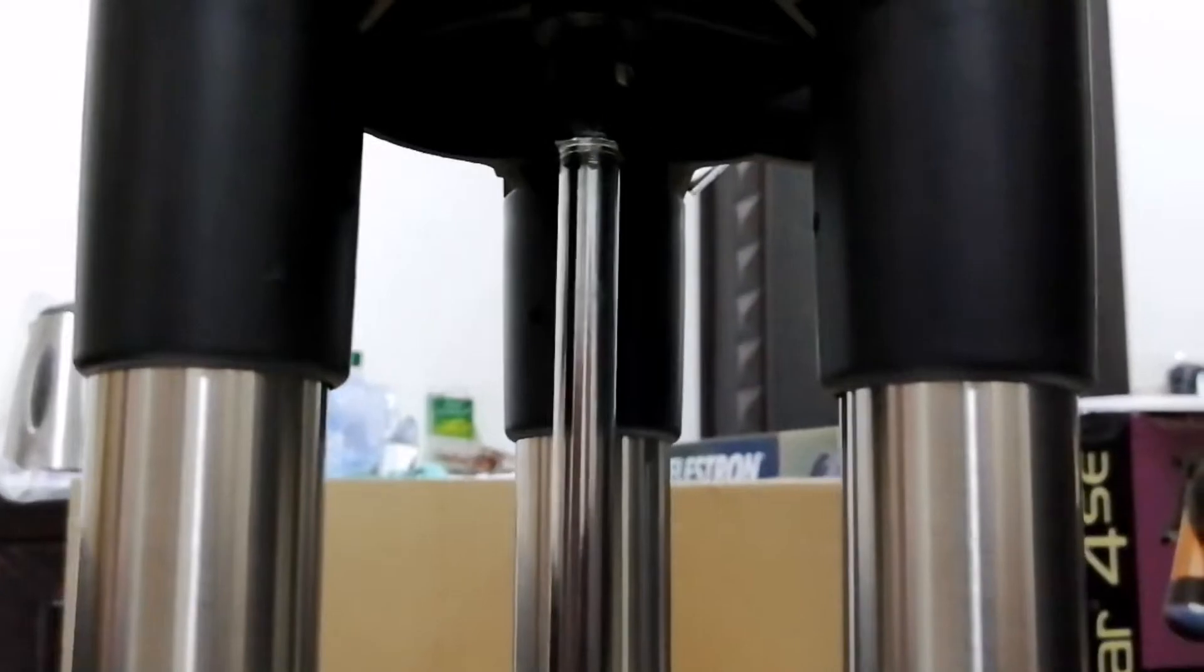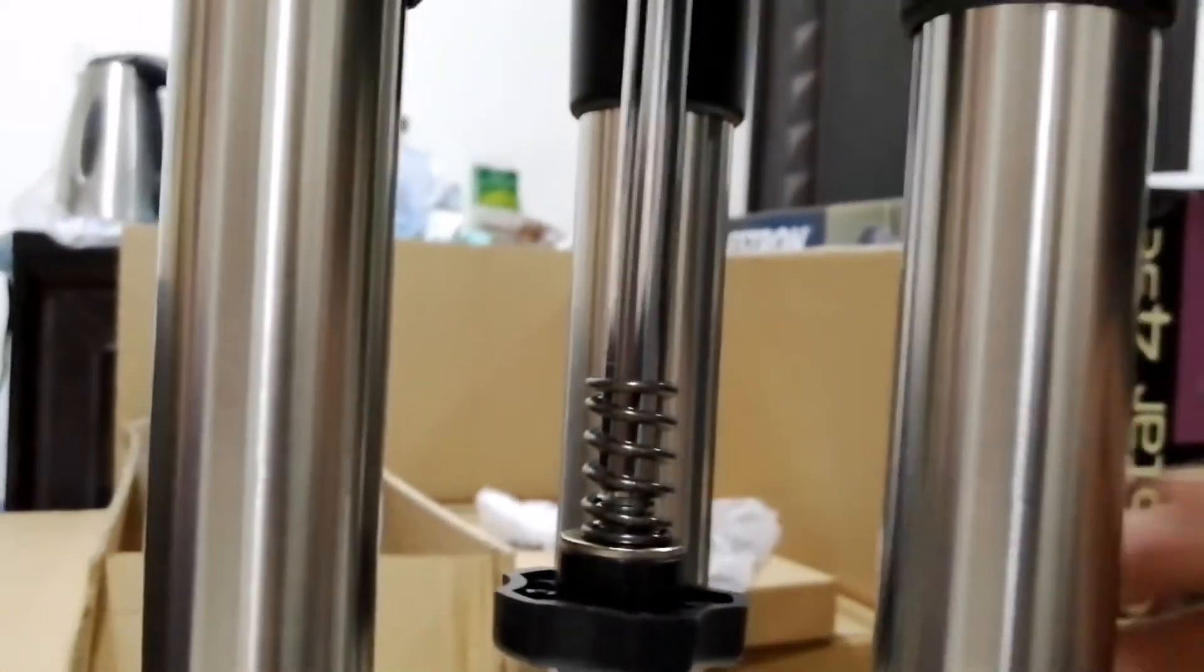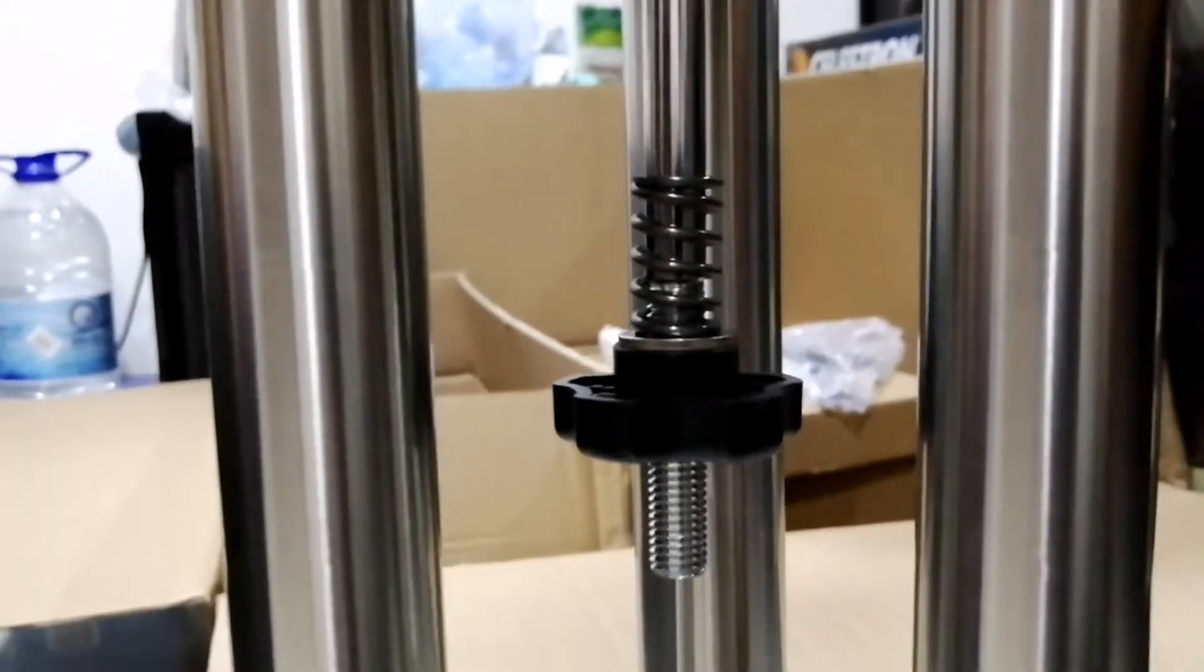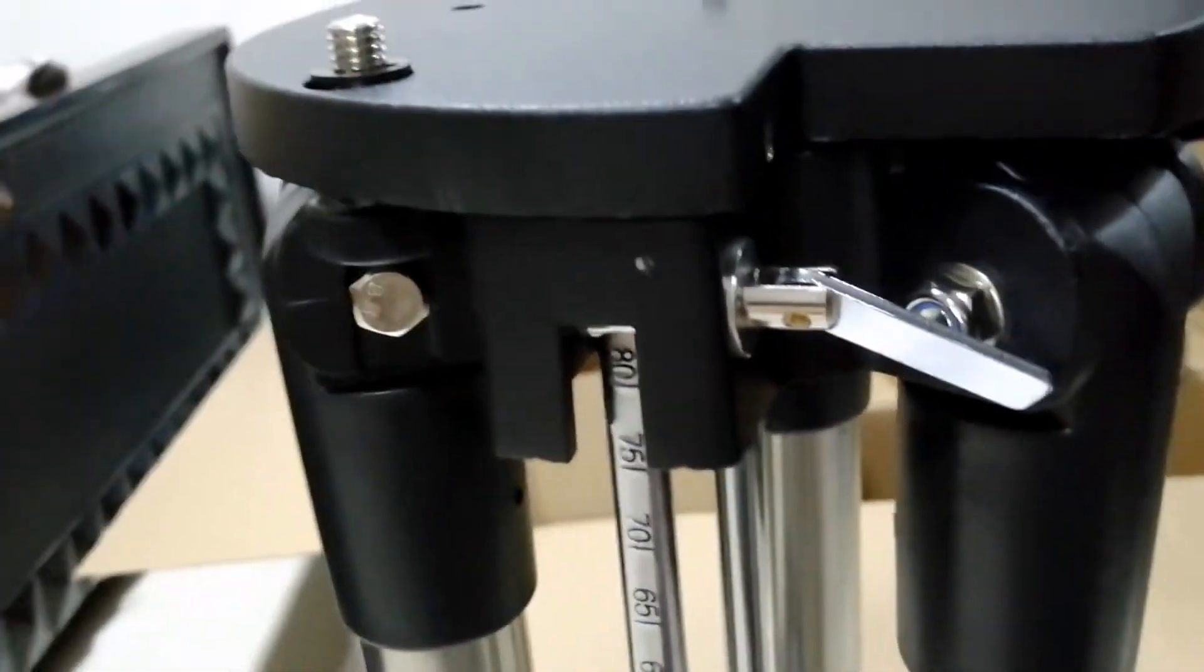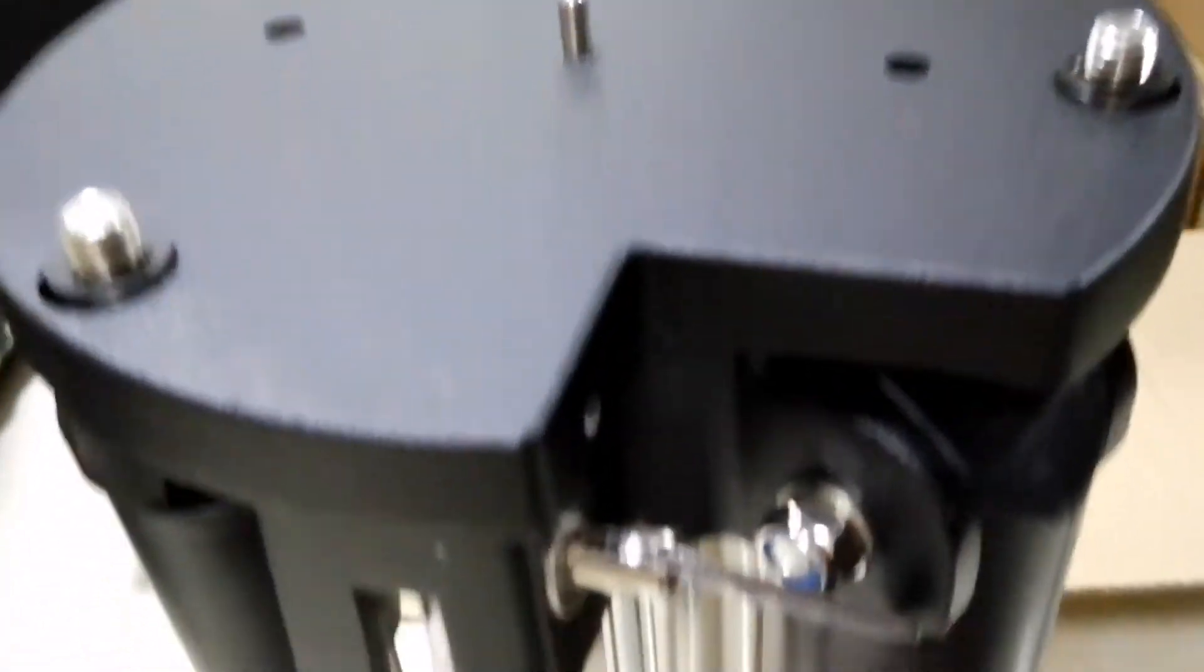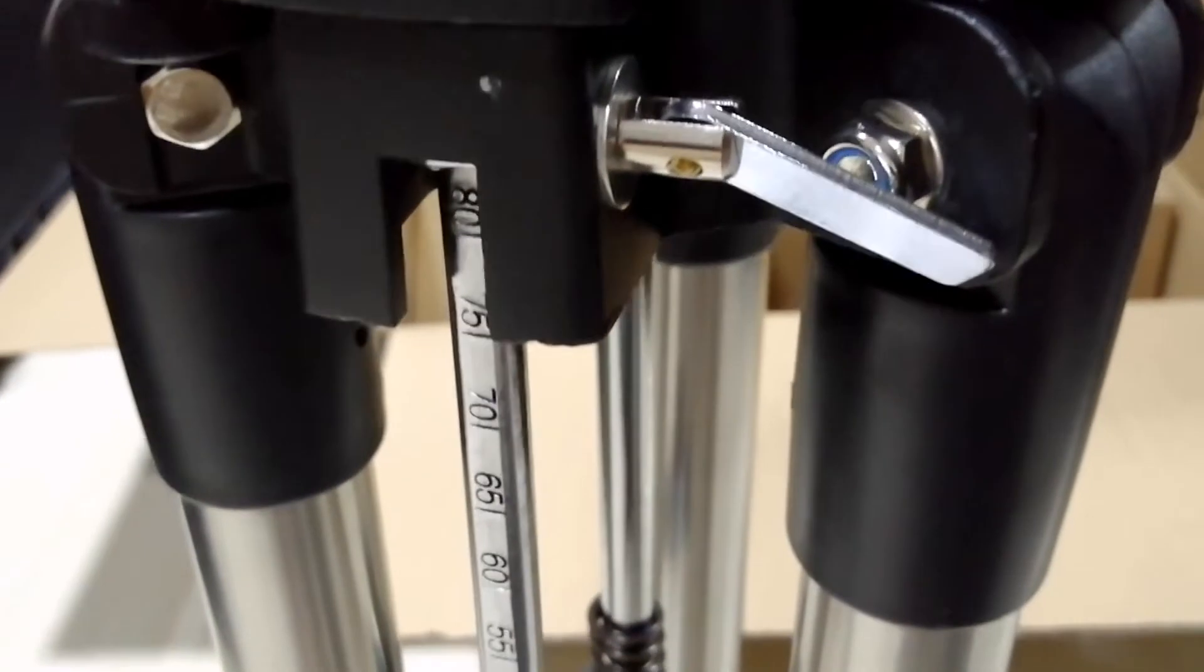If you want to get your feet wet with astrophotography, the 4SE has a camera control option. It helps you take a series of long duration exposures with your DSLR camera. Just don't try to hang a very heavy camera body on this little telescope. An oddly weighted mount won't track well enough for sharp images.